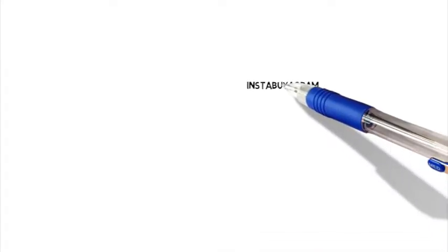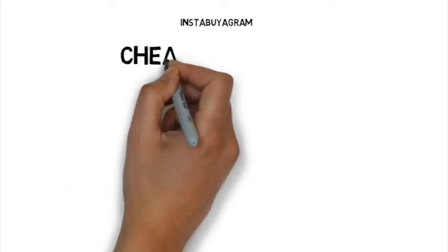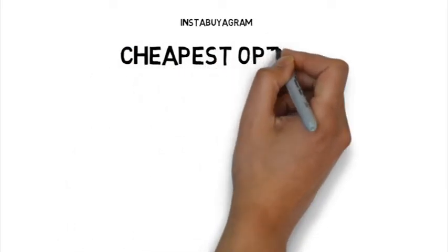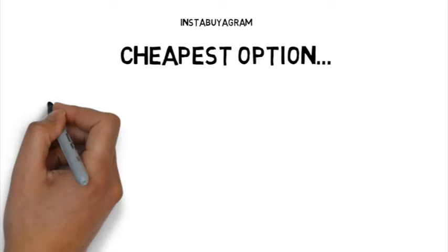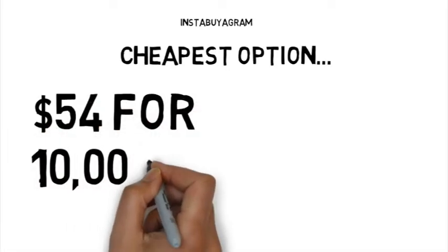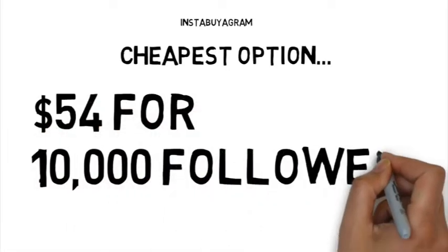So let's take a look first at Instabiogram. It's going to cost you $54 for 10,000 subscribers. That's the cheapest option on their website, that's their biggest bulk option.